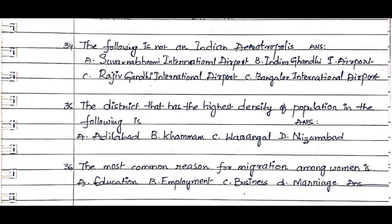Question 35: The district that has the highest density of population is. Option A. Adilabad, Option B. Khammam, Option C. Warangal, Option D. Nizamabad. The answer is Option D. Nizamabad.